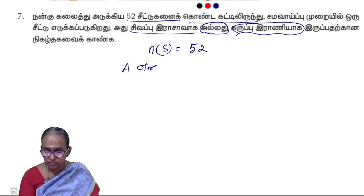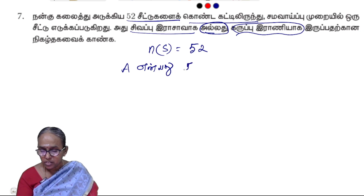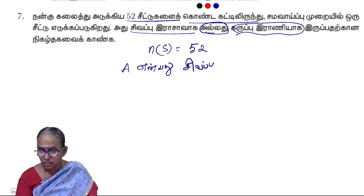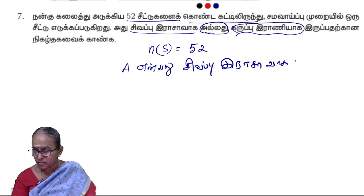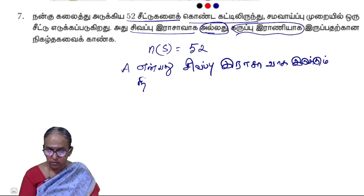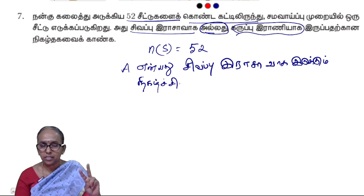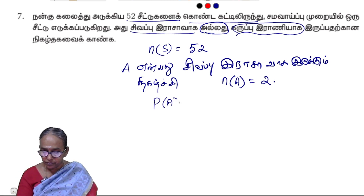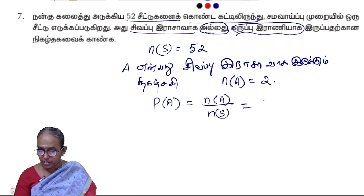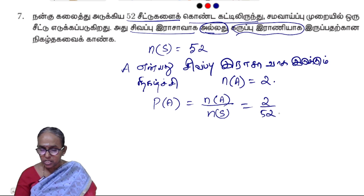A is 90. Sivapu Rajavaha. Okay. Now, how many Sivapu Rajavaha are? 2 Sivapu Rajavaha. So, n of A is equal to 2. Then, P of A is equal to n of A by n of S. So, 2 by 52 is the Sivapu Rajavaha.